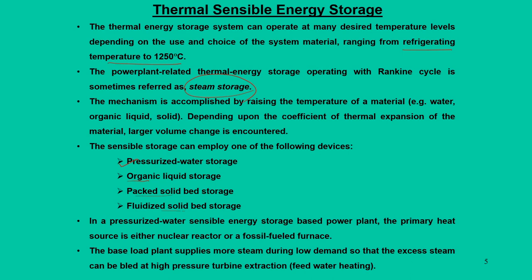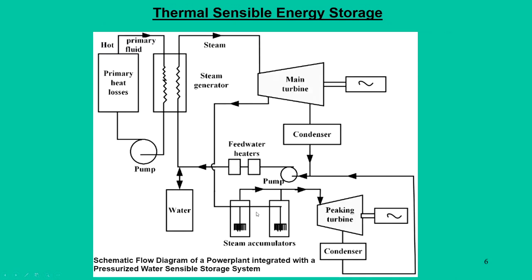Another advantage of this system is that it can be integrated with any kind of power plant — whether operated through a nuclear reactor or any fossil fuel furnace. The entire idea is that the base load plant supplies steam during low demand, so that excess steam can be bled at the high-pressure turbine extraction. This is similar to a feed water heating system or regenerative mode of operation in a steam turbine for a conventional power plant. In the thermal circuit, there are two turbines: one is the main turbine and the other is the peaking turbine — the main turbine runs at base load.